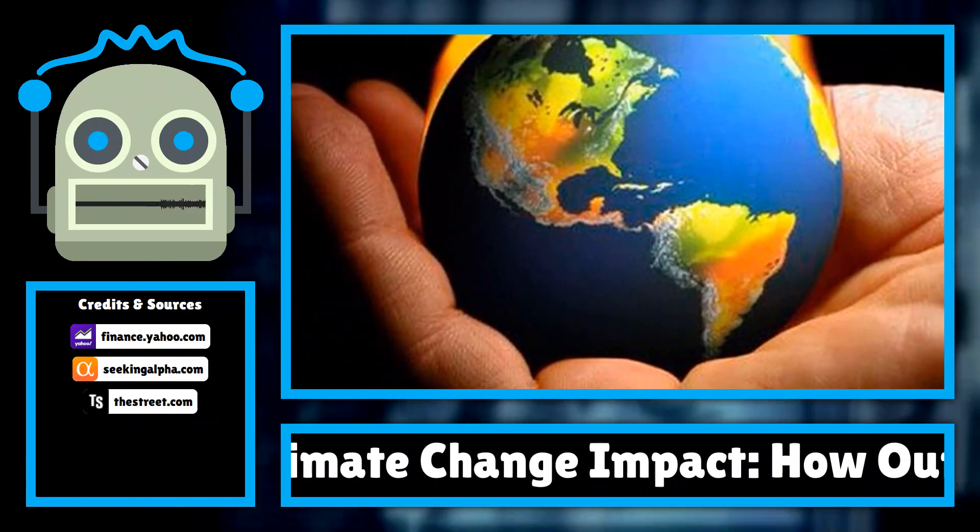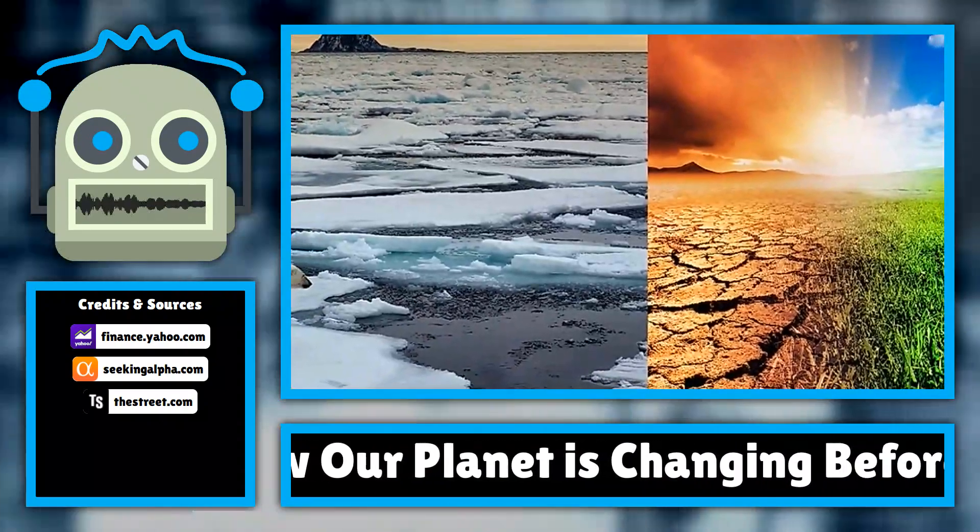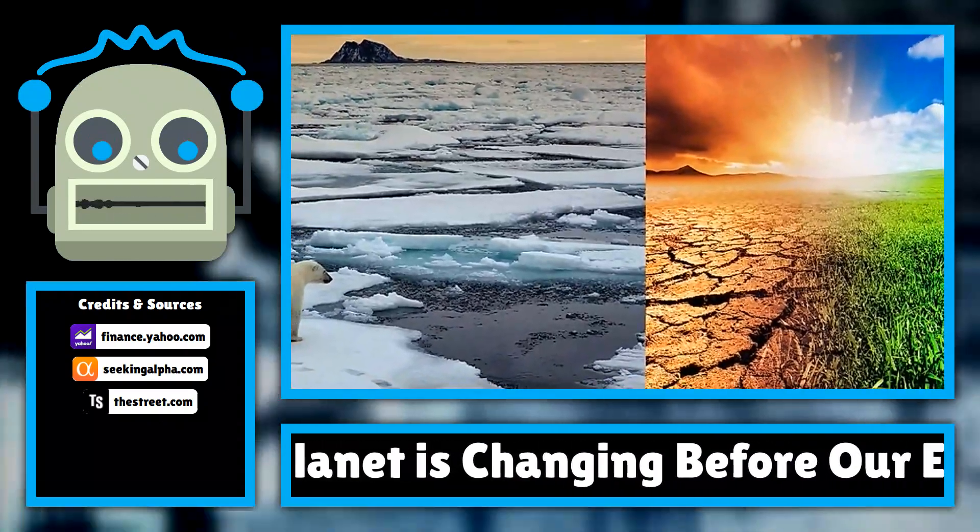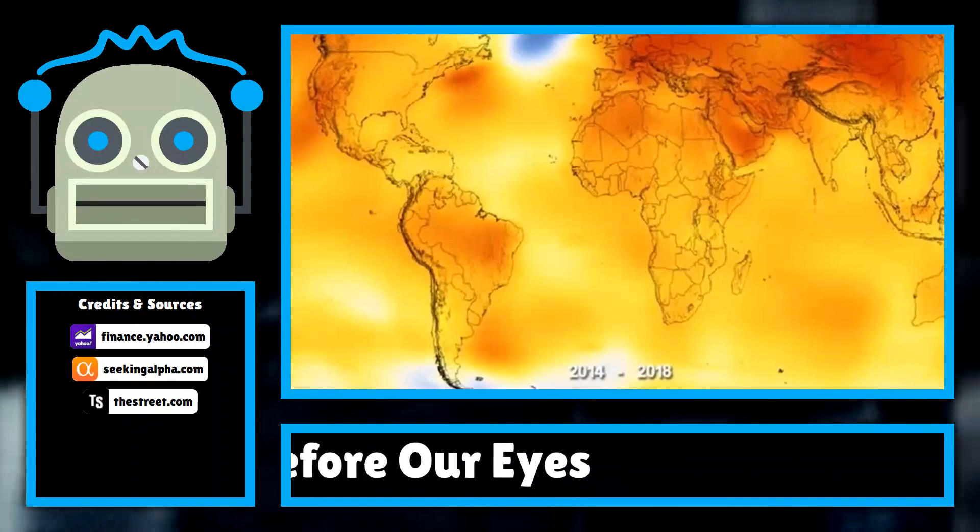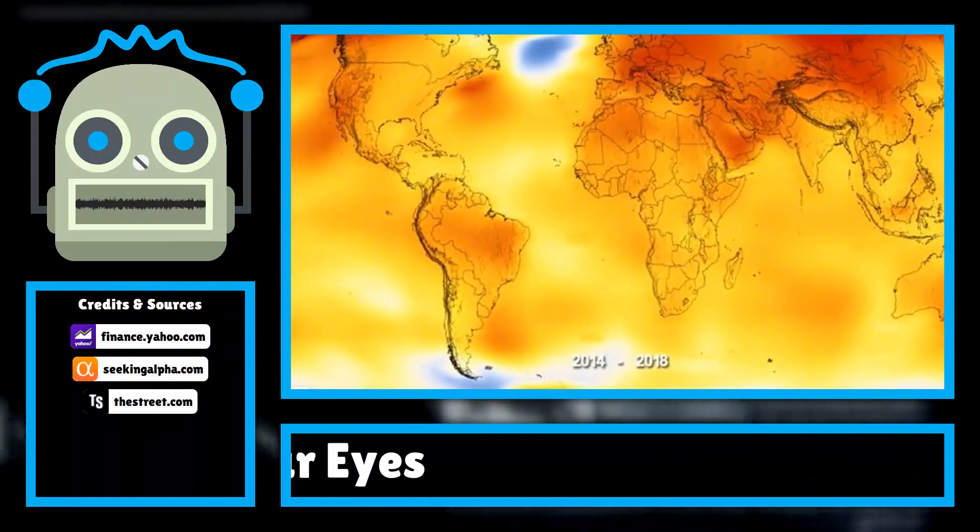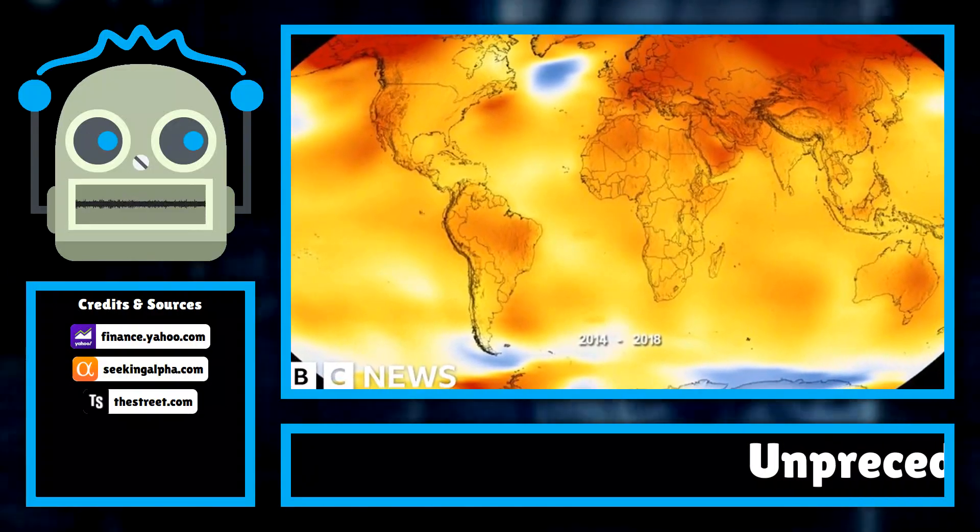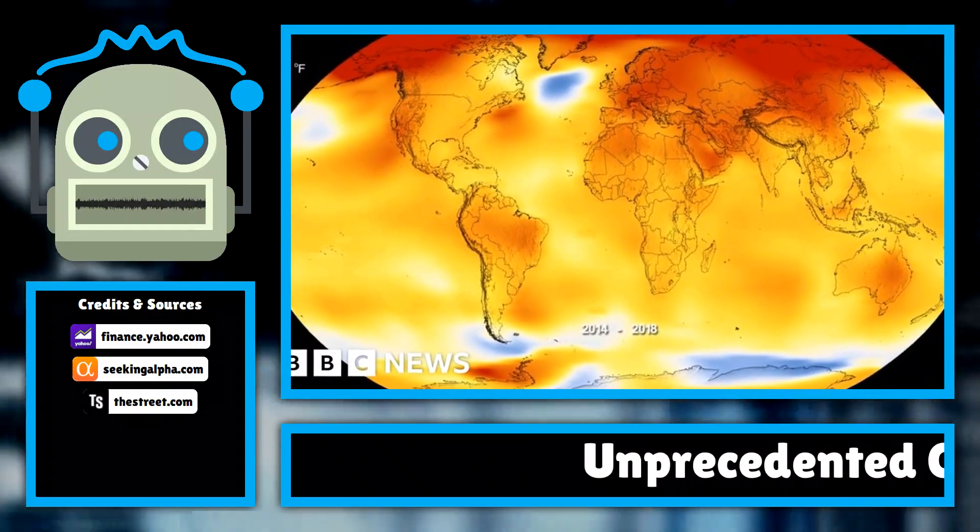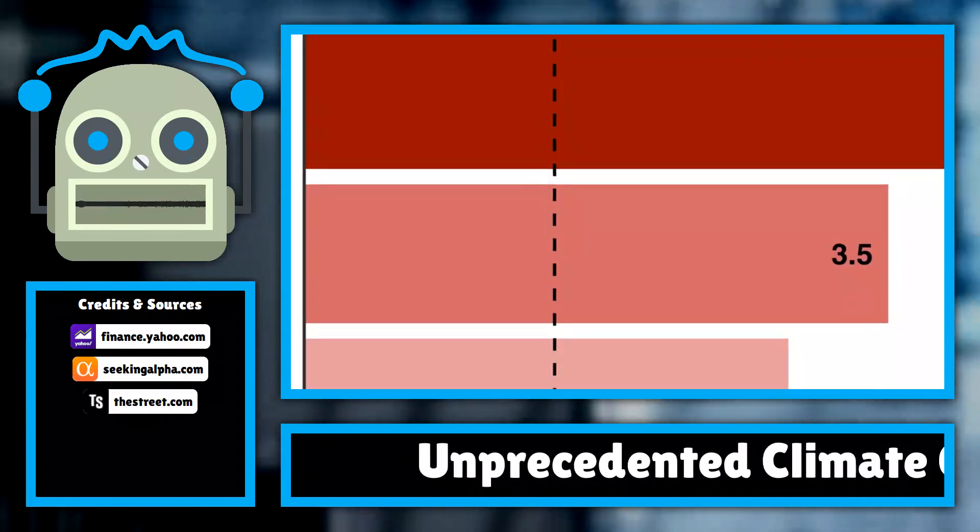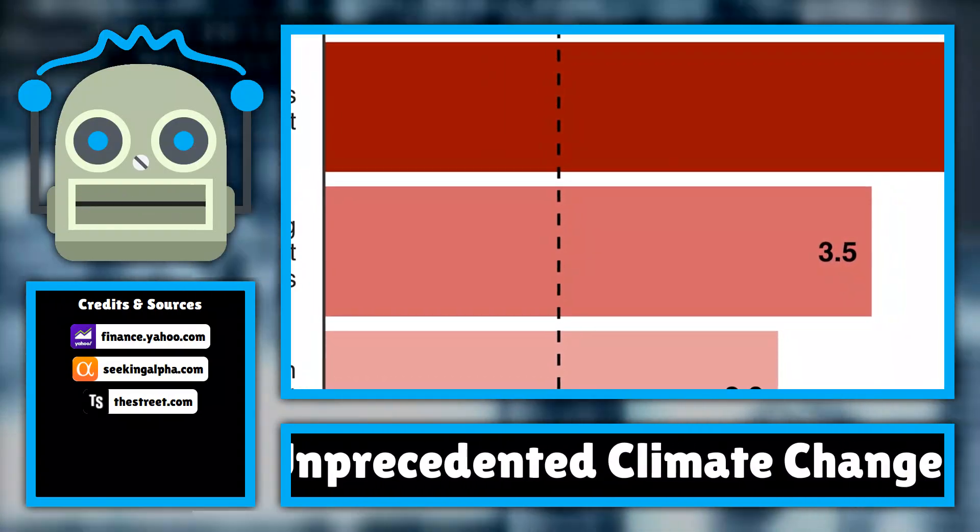The latest data from the Intergovernmental Panel on Climate Change, IPCC, indicates that the planet's average surface temperature has risen by approximately 1.2 degrees Celsius since the pre-industrial era. This seemingly small increase has resulted in significant disruptions to weather patterns, leading to increased rainfall in some regions and severe droughts in others. The implications for agriculture are dire, as farmers struggle to adapt to changing conditions that threaten their crops and livelihoods.